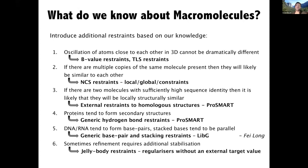If there are two molecules with sufficiently high sequence identity, they'll likely be locally structurally similar, so we can generate external restraints to homologous structures using ProSMART. Proteins tend to form secondary structures, so we can generate generic hydrogen bond restraints using ProSMART. DNA and RNA tend to form base pairs, and stacked bases tend to be parallel, so we can generate generic base pair and stacking restraints using LibG, which was developed by Fei Long.